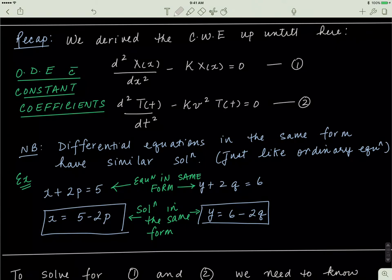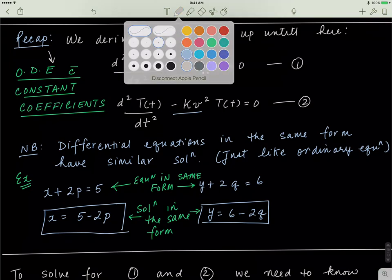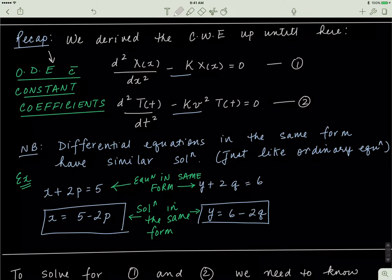Last time we derived the classical wave equation and converted a partial differential equation to an ordinary differential equation with constant coefficients. The constant coefficients were the coefficients of X(x) and T(t). Whenever you have differential equations in the same form — both with constant coefficients, both ordinary, both equal to zero — their solutions are also similar. So X(x) and T(t) better have similar solutions if this equation is mathematically valid.